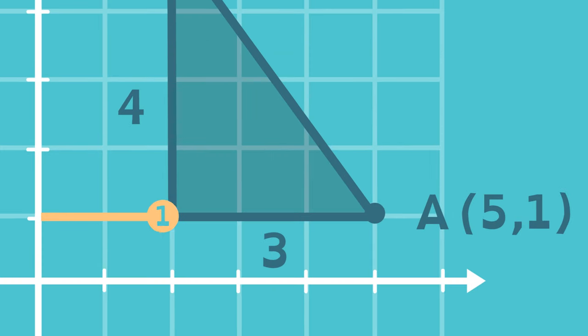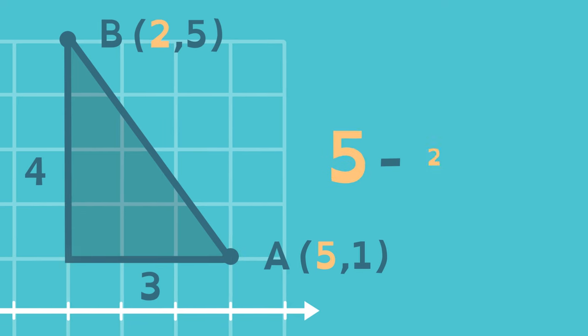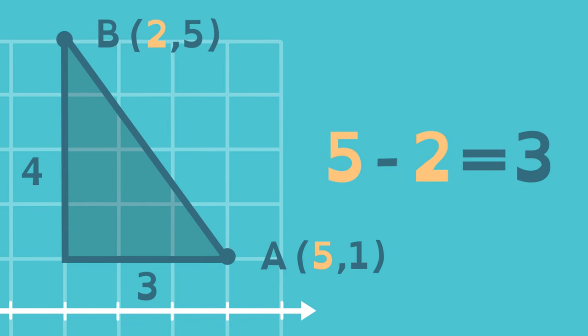For the horizontal leg, take the x-distance of A and subtract the x-distance of B. This is equivalent to subtracting the x-coordinates of A and B.